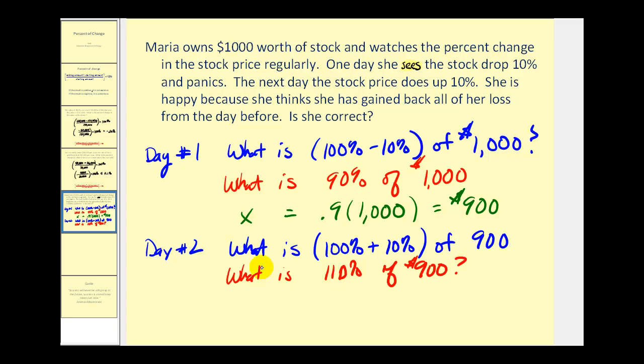The real question becomes, what is 110 percent of $900? Going back to our percent equation, we have x equals 110 percent, the decimal is 1.1, times $900. 1.1 times $900 is equal to $990.